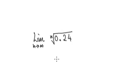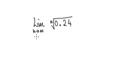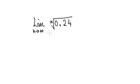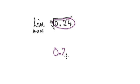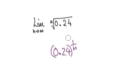Next question: find the limit of this as n tends to infinity. This is like a small number to the nth root. To do this, visualize this as being 0.24 to the power of 1 over n, because the nth root you can always write as to the power of 1 over n.